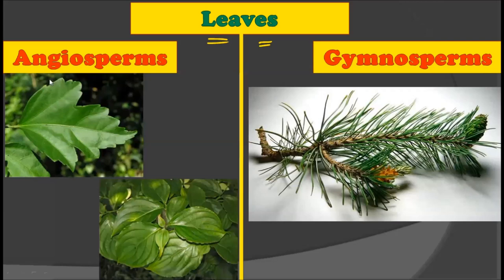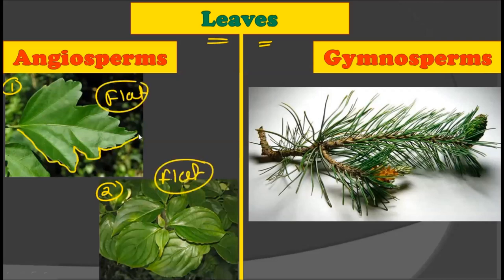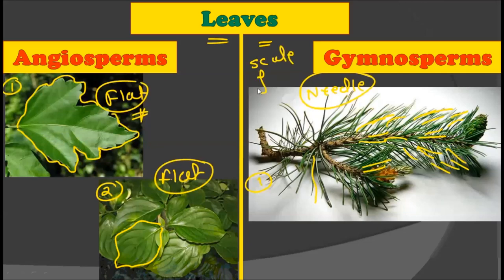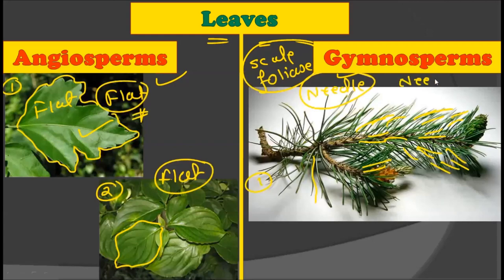Now let's consider the leaves. Angiosperms have very flat leaves, while gymnosperms have needle-like leaves. The leaves of the gymnosperm visible on the stem are like needles, needle-like in shape. Gymnosperms also have two kinds of leaves — scaled leaves and foliage leaves — but neither shows the differentiation as much as the angiosperms. So the basic difference is that angiosperms have flat leaves while gymnosperms have needle-like leaves.